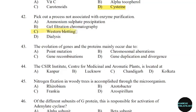43rd question: The evolution of genes and proteins mainly occurs due to. Correct answer: Option D — Gene duplication and divergence.